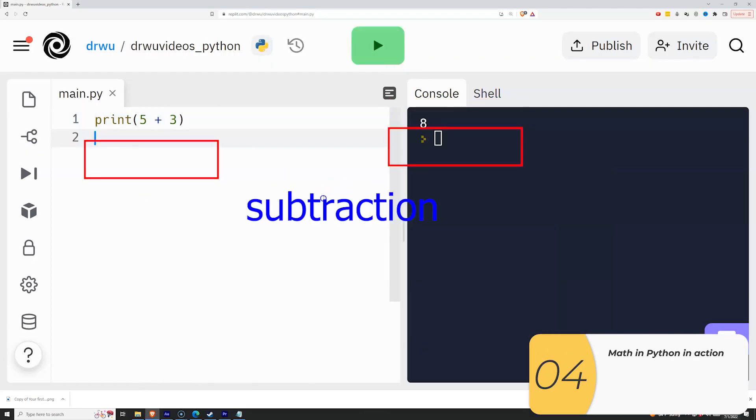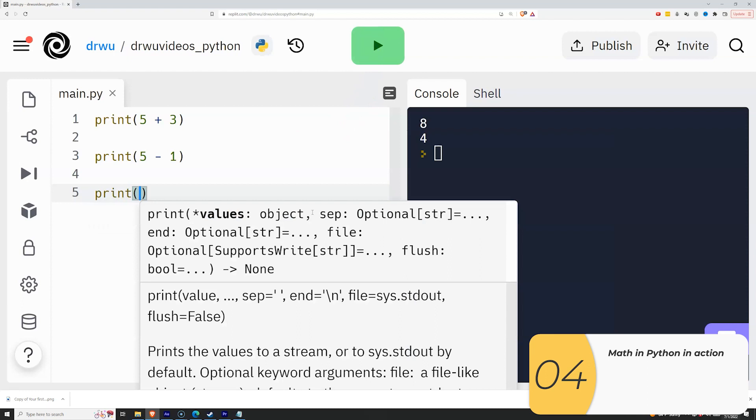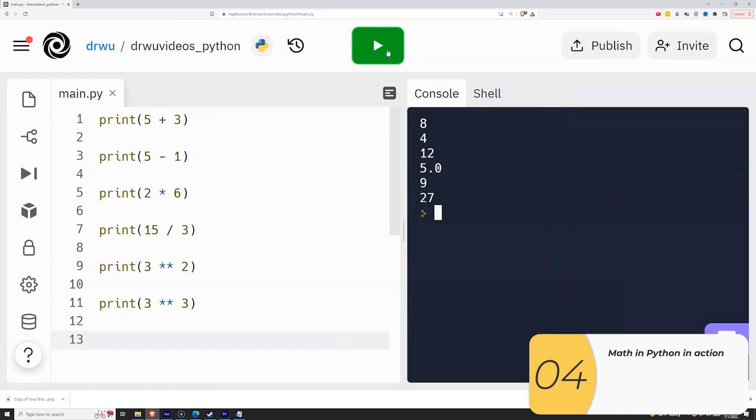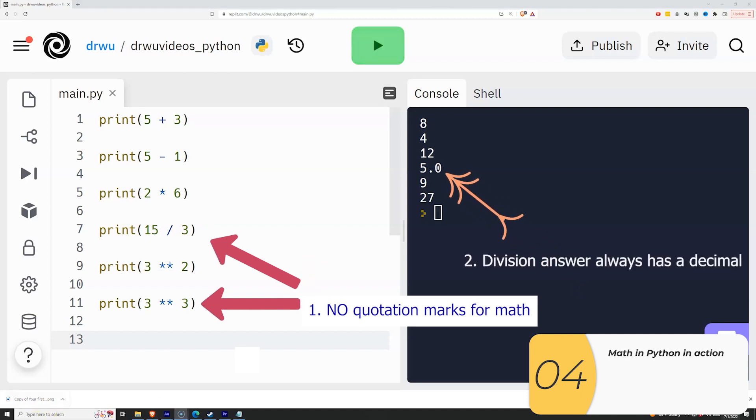So here it is in action. I'm printing with an addition, a subtraction, a multiplication, and a division, and then two exponent problems. A couple of things to know. There's no quotation marks. We'll get into why later, but no quotation marks. And the other is for division. Even if it divides evenly, the answer will still have a decimal in it. In this example, 15 divided by 3 is 5.0, not just 5.